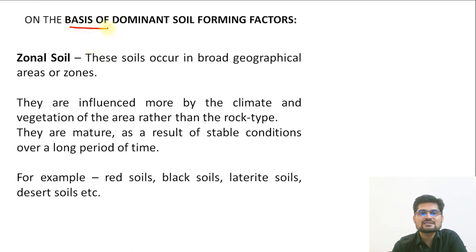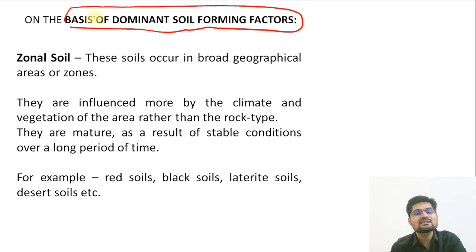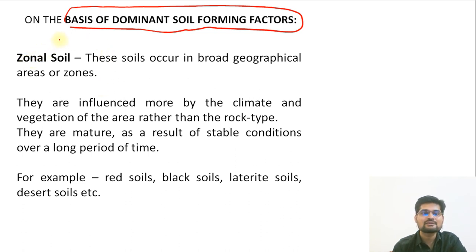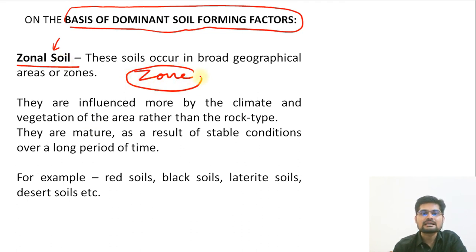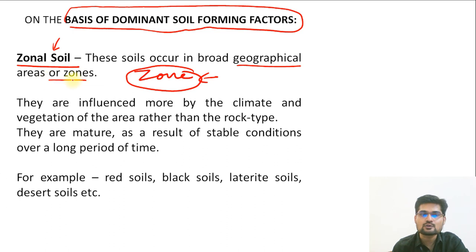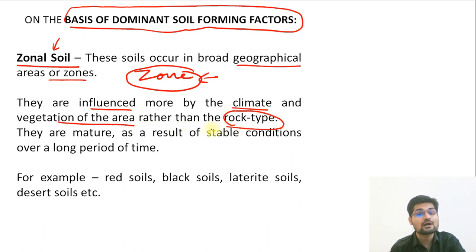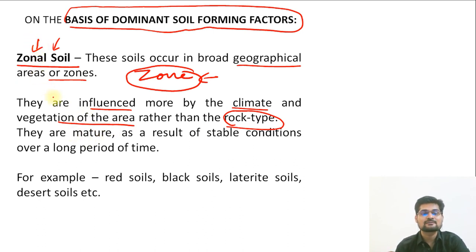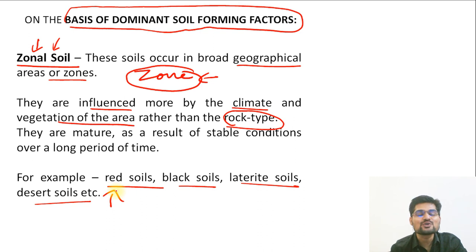There is also another classification based on dominant soil-forming factors. The first is zonal soil. In a particular zone, these soils are geographical in nature — they are influenced more by the climate and vegetation of the area rather than specifically rock type. Geographical factors like climate and vegetation play a key role in forming zonal soils. Examples include red soils, black soils, laterite soils, and desertic soils — all from a particular zone.